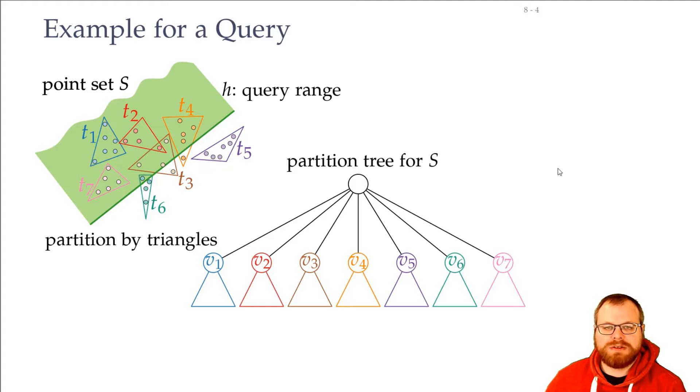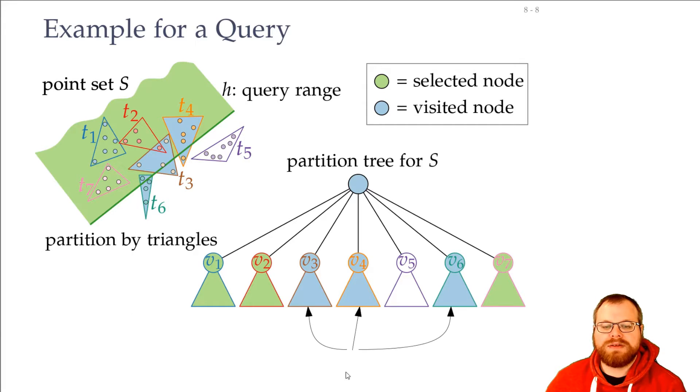What steps do we have to do now? We have to find out which nodes shall be selected, so which triangles lie completely inside the query range, and we have to find out which nodes are to be visited, so those that recursively have to go into the subtrees.